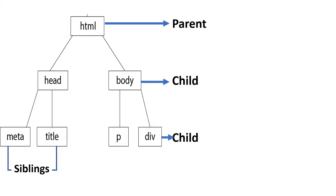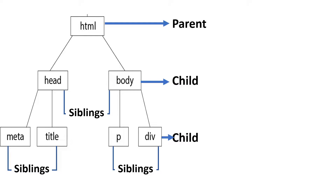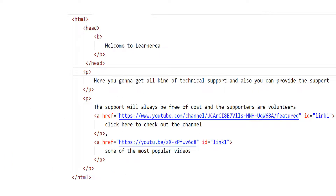Tags that are in parallel are known as siblings. Head and body are siblings between themselves. Whatever tags are inside another tag — the container is called the parent of whatever it contains. I just hope that is clear.